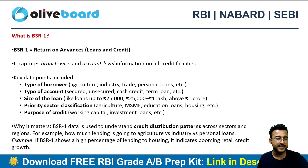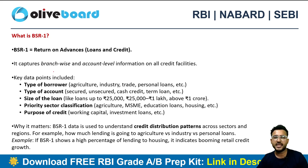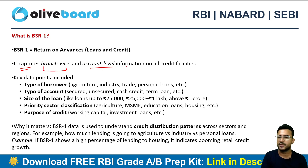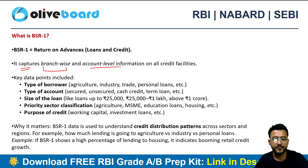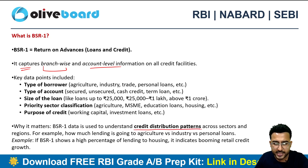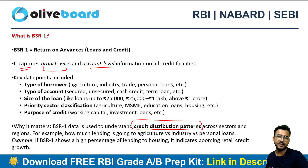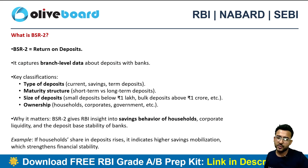BSR 1 is related to loans and credit — what returns on advances you are able to generate. BSR 1 captures both branch-wise and account-level information of all credit facilities, such as type of borrower, type of account, size of loan, priority sector classification, and more. It helps show the credit distribution patterns across different sectors. We'll also have a deep dive into the data recently released by RBI.